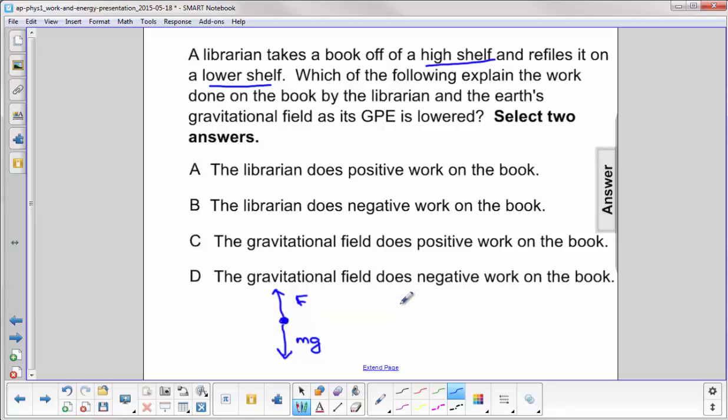The displacement as the book moves down is in this direction. And let's use delta y because that's normally what we have on a vertical axis.